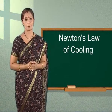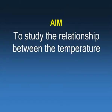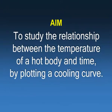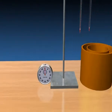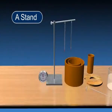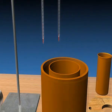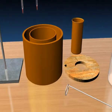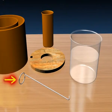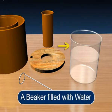And we will learn to verify it. The aim of the experiment is to study the relationship between the temperature of a hot body and time by plotting a cooling curve. The apparatus that we need to perform the experiment is a stopwatch, a clamp, a stand, two thermometers, and Newton's law of cooling apparatus, which is a double-walled enclosure with a calorimeter, a stirrer, and a wooden lid. We also need a beaker filled with water.